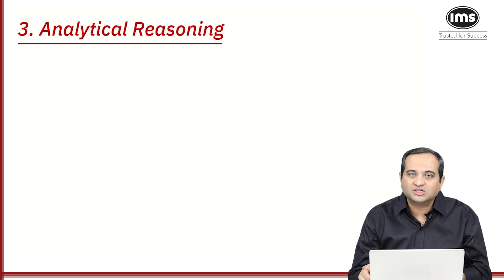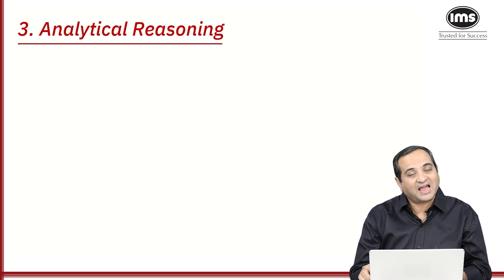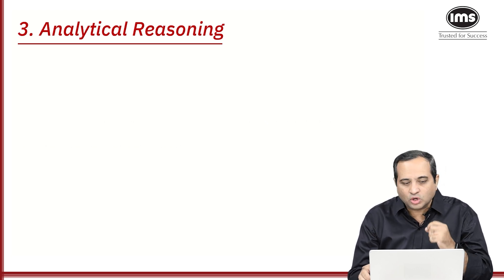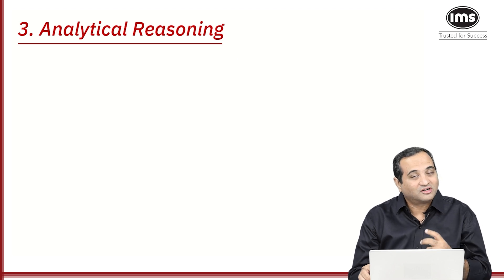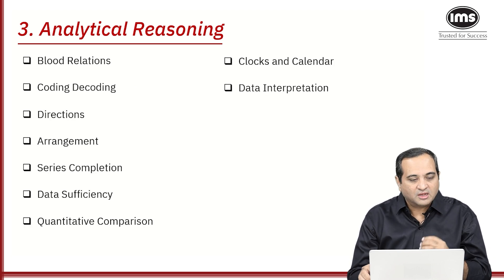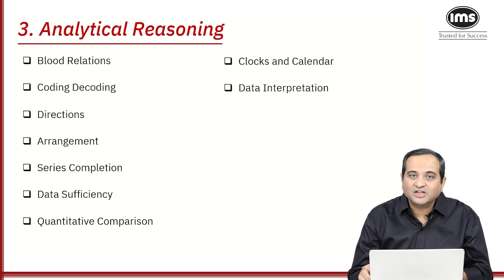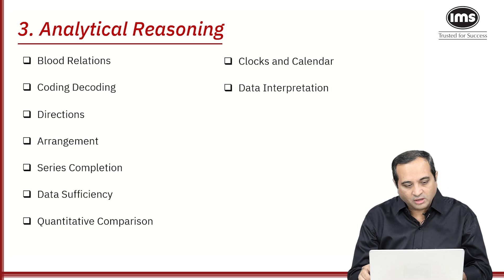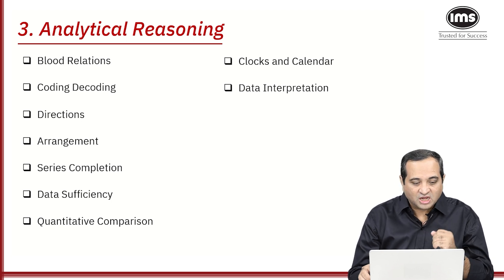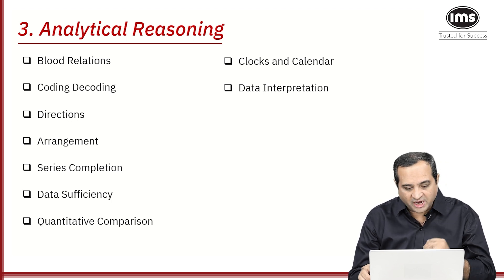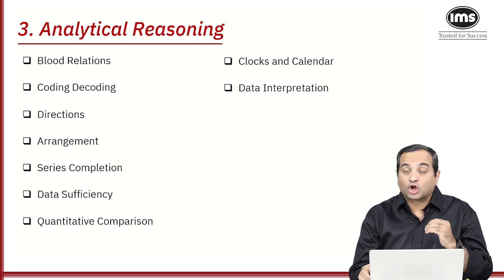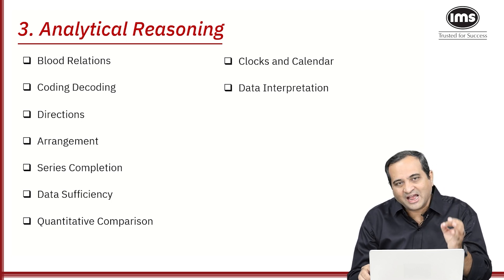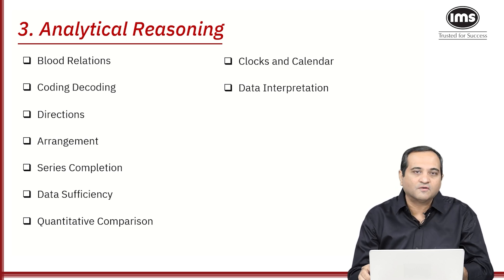The third type of questions is analytical reasoning, which most of us are aware of. The types of questions here include blood relations, coding-decoding, questions on directions, questions on arrangement, series completion, data sufficiency, data comparison, clocks and calendars, and DI is also part of this.